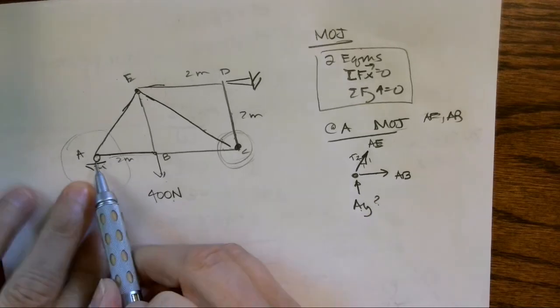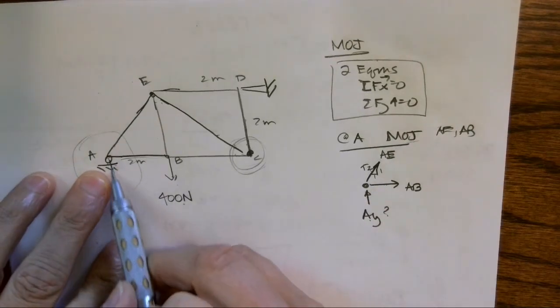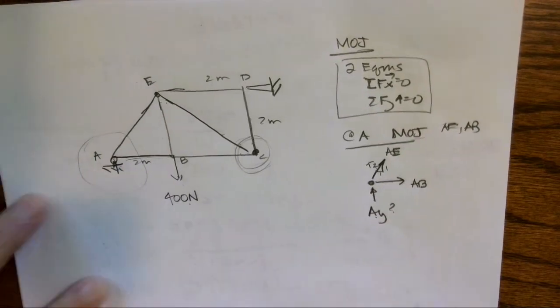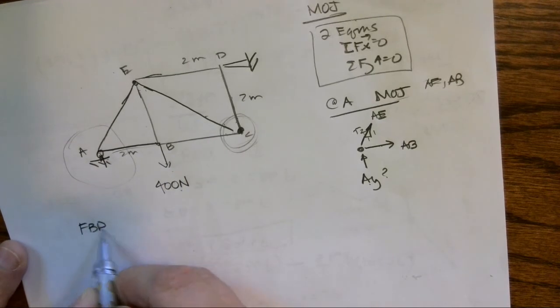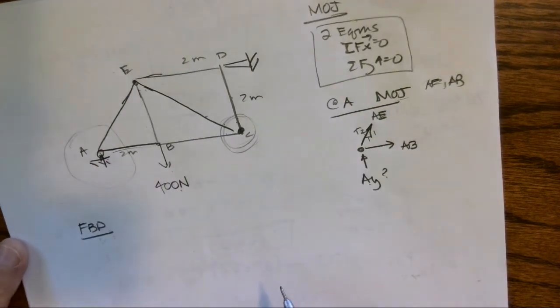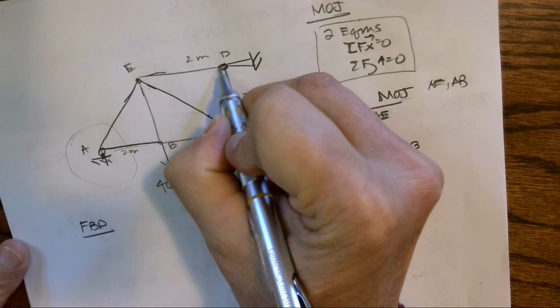So I don't know Ay, and I have to include that on the joint. It is pushing up, it is keeping that truss in place. So the first thing I'm going to do is I'm going to just go ahead and call this my overall free body diagram, and I'm going to sum the moments at D.